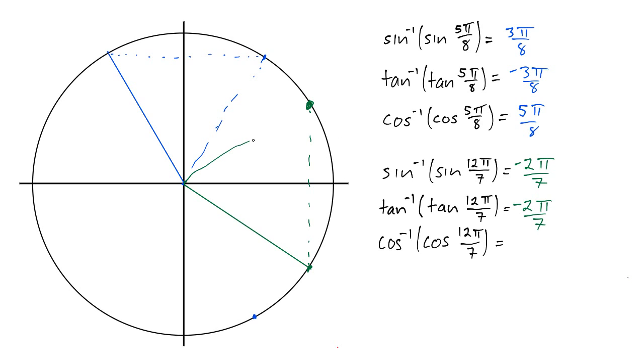So what is this angle here? That angle there, well, we went backwards 2π over 7 to get down to 12π over 7, so let's go forwards the same amount. So this will be positive 2π over 7.